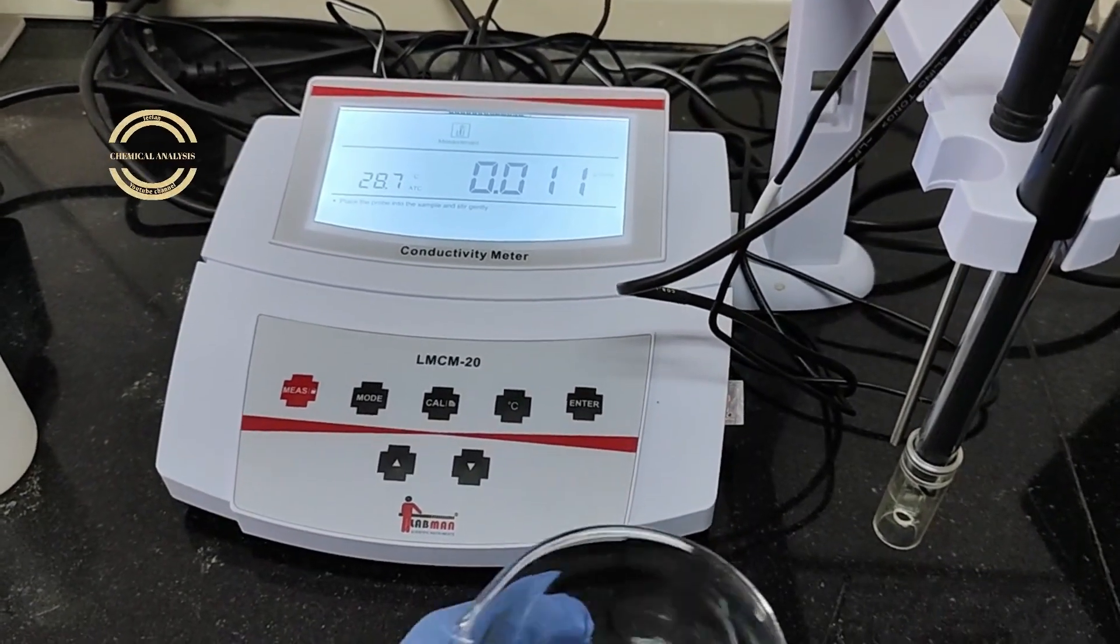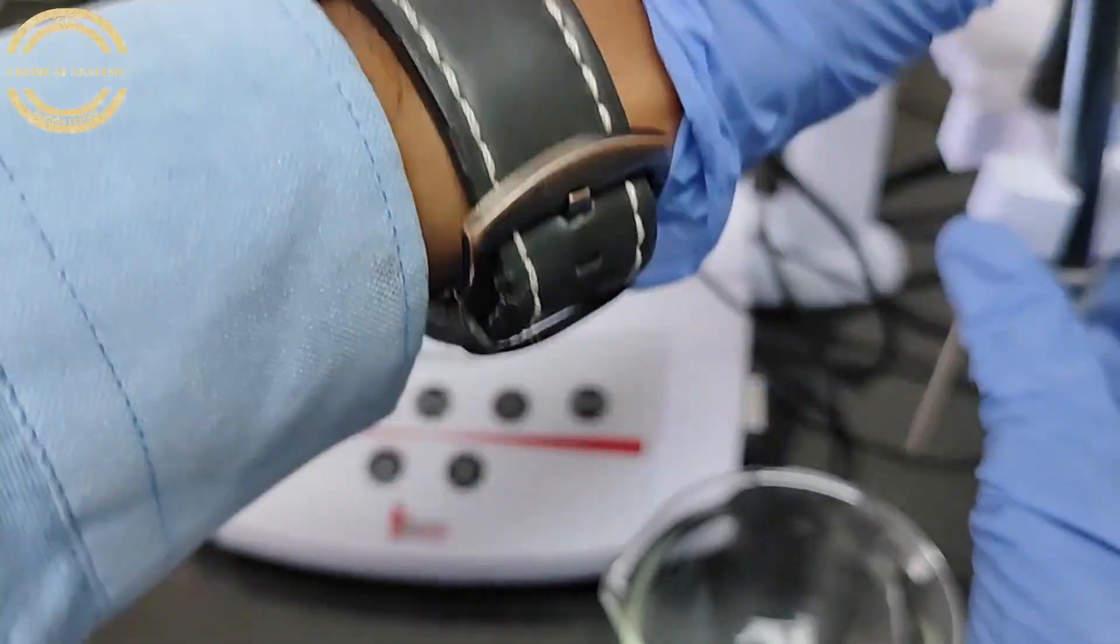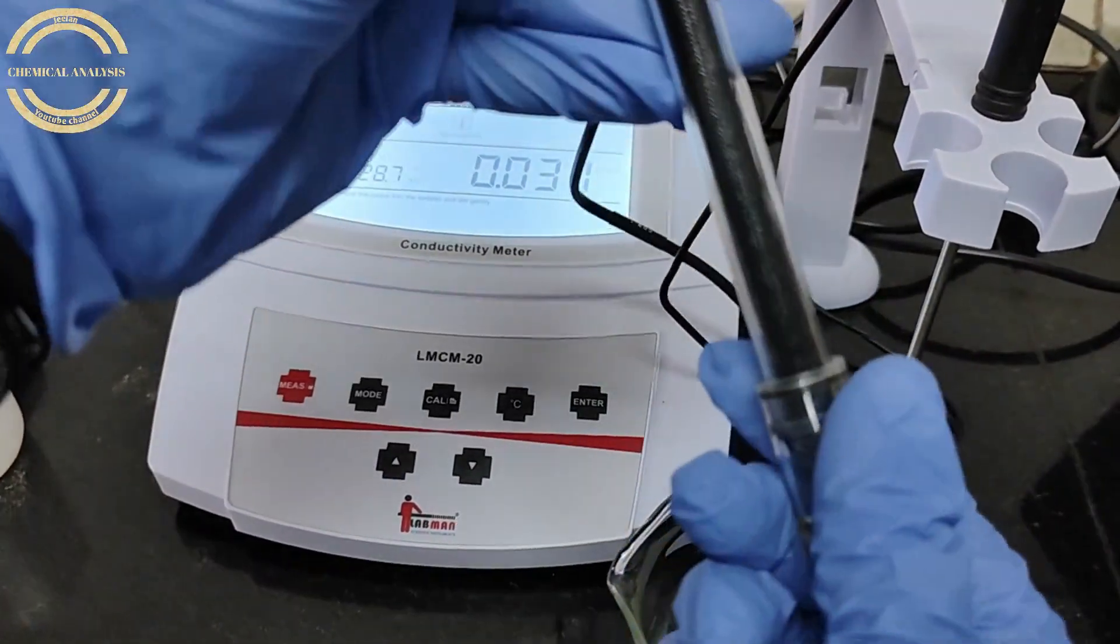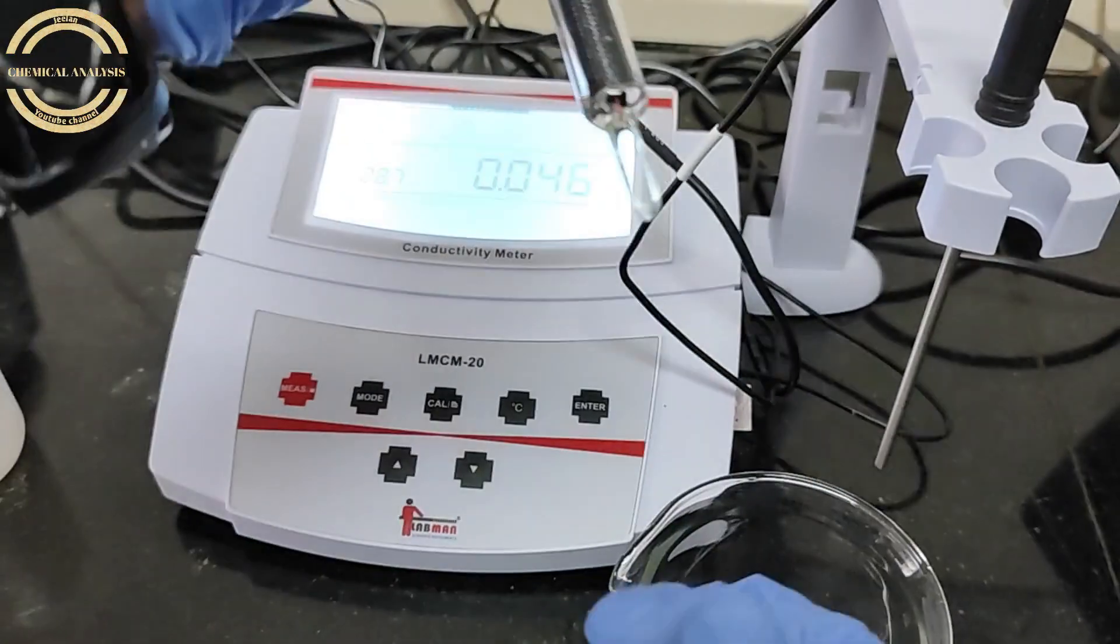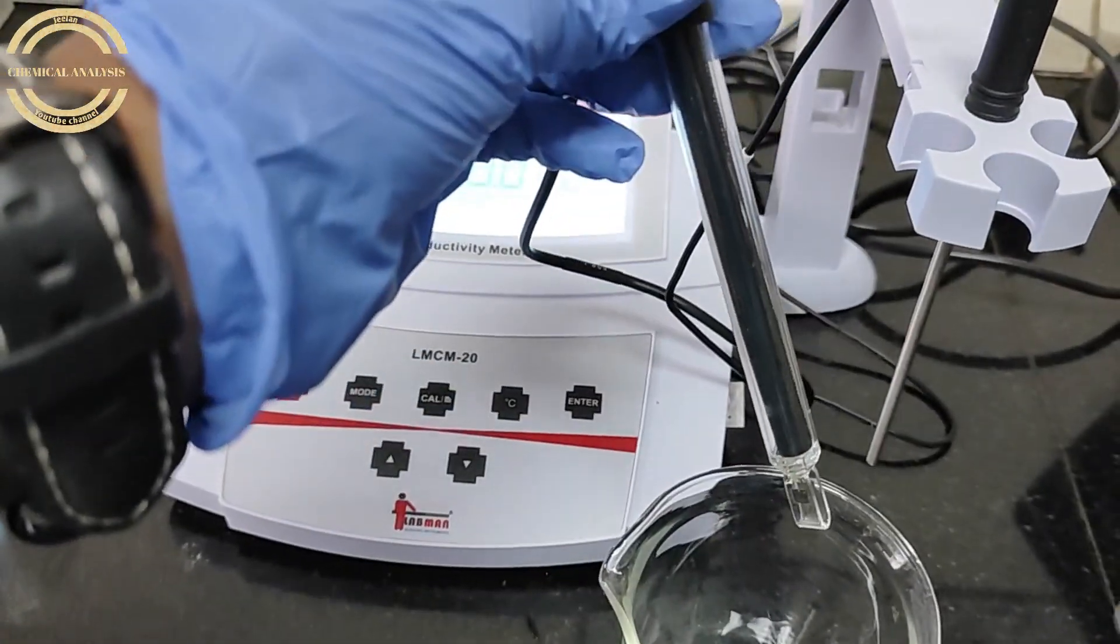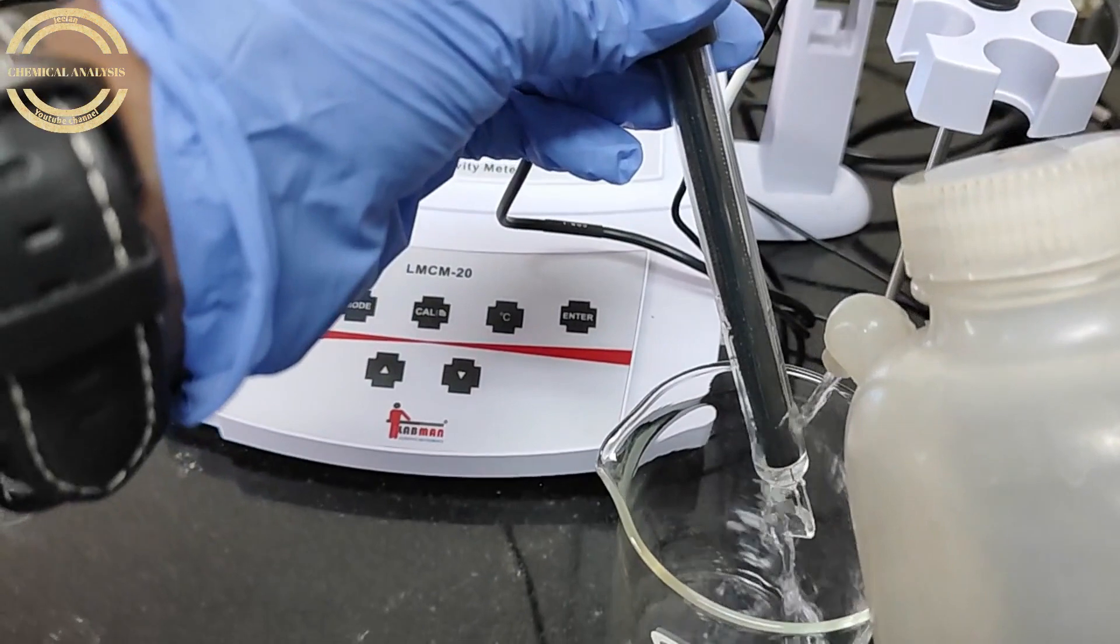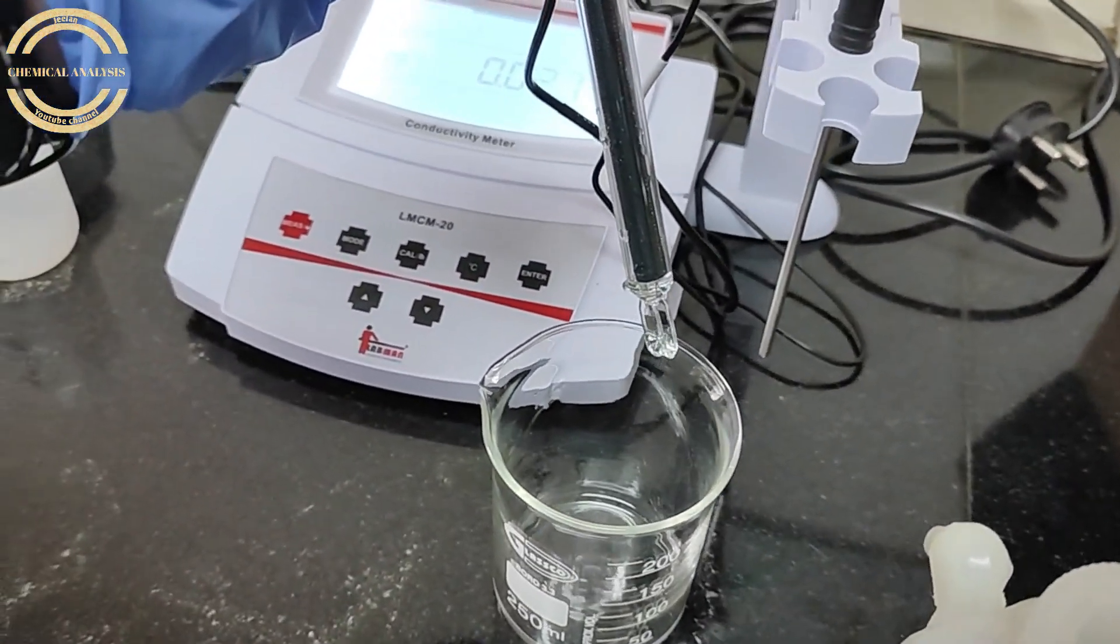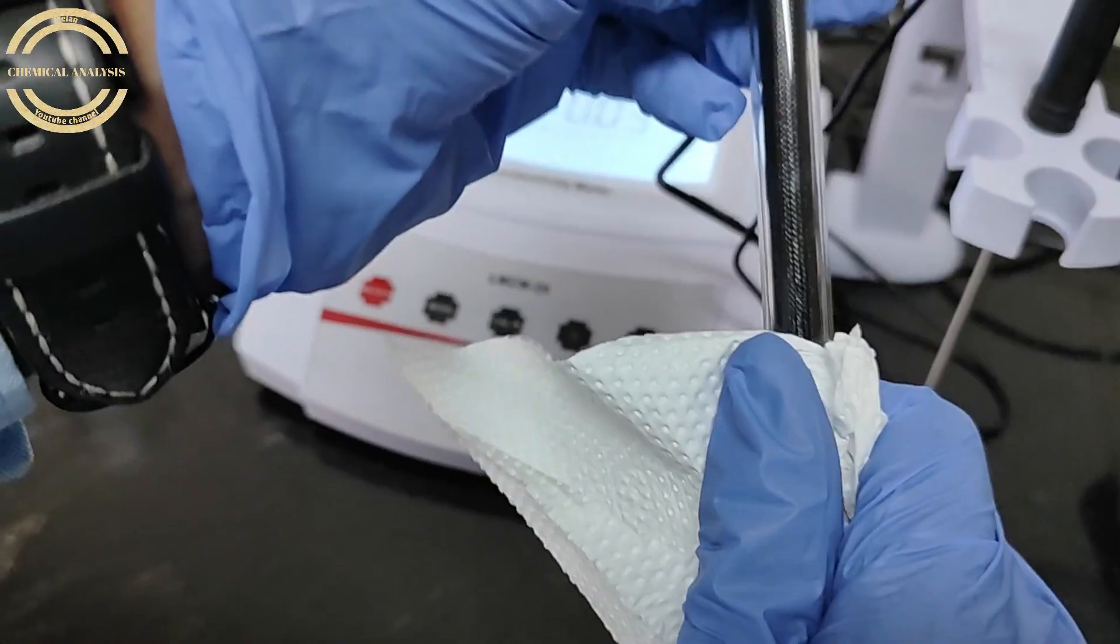Hi friends, welcome to the Chemical Analysis Channel. Today we're going to learn about conductivity in water and wastewater. First of all, we calibrate the instrument. Switch on the instrument and wash the electrode with DM water, then wipe with tissue paper.